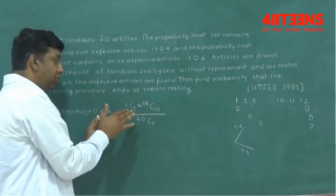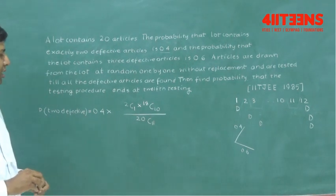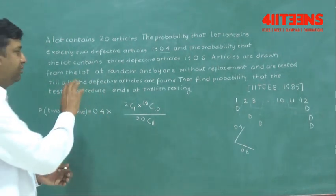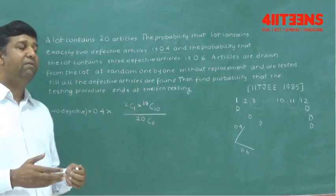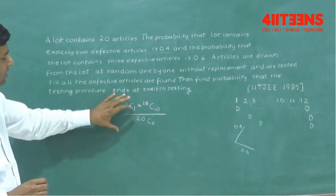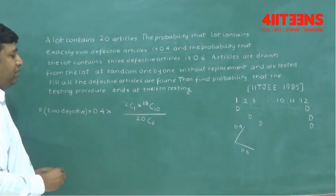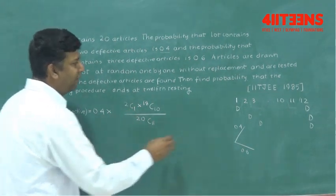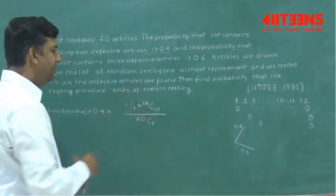One by one without replacement also can be represented by 2C1 into 18C10. And if anyone is interested to understand this particular thing, 2C1 into 18C10 in a detailed way, you can message us. We will explain in a detailed way. So this is basically the probability of choosing the first defective to come in any of the first 11 cases. So I choose one defective and 18C10 randomly you can choose it.